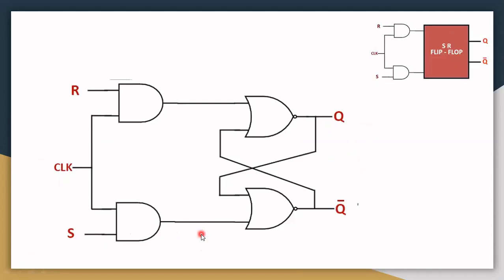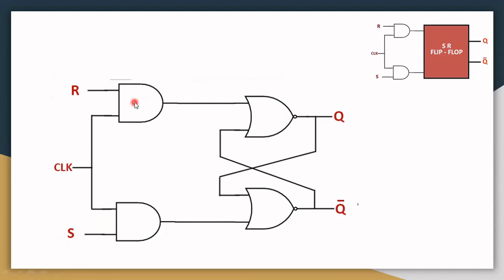This is the logic diagram of the Clocked SR Flip-Flop. We already studied the SR flip-flop part. In addition to that, we are connecting AND gates to the input side. One input of the first AND gate is R, one input of the second AND gate is S, and the other two inputs of the two AND gates are connected commonly to the clock.